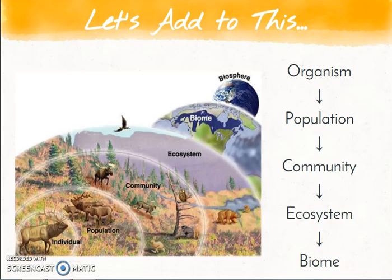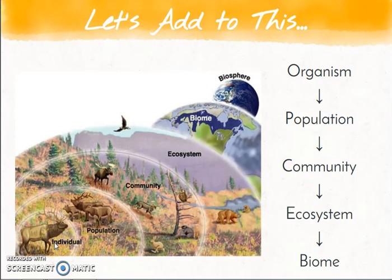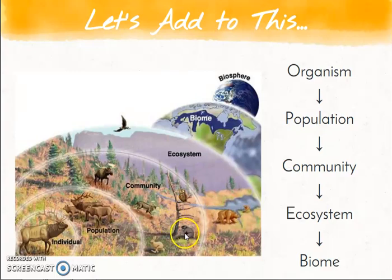This is a way to picture each of the things we just discussed. One individual organism might be a caribou. When we take that one individual organism and put other organisms of the same species along with it in the same area at the same time, we call that a population. When we take that population and include all the other organisms of other species in that same area at the same time, that is the community. Then once you look at not only the living things but also the things that were never living — like water, rocks, soil, or sunlight — we call that the ecosystem.